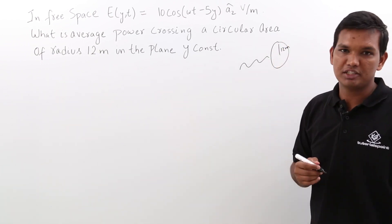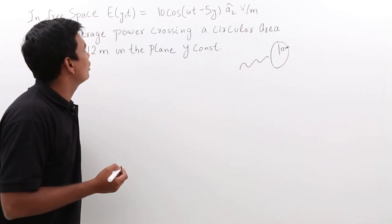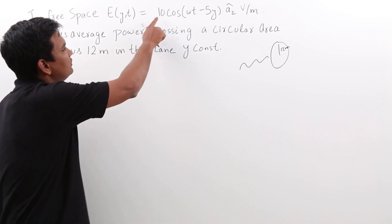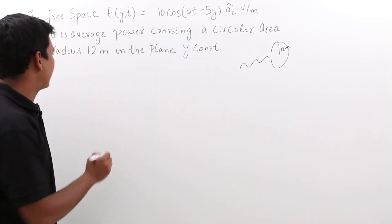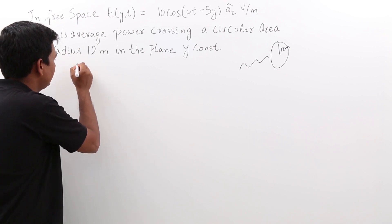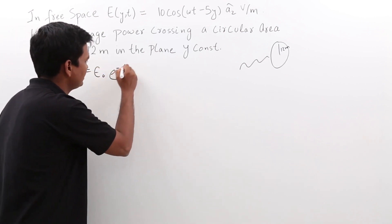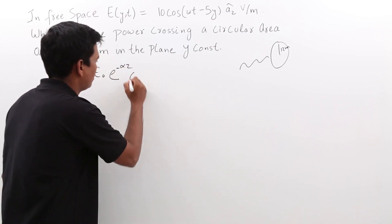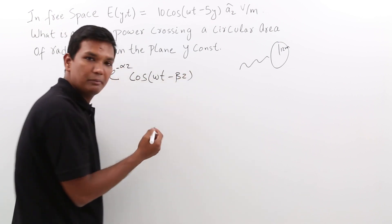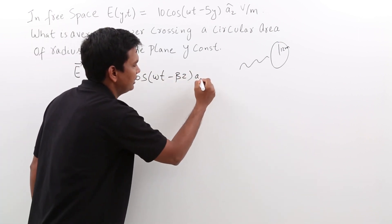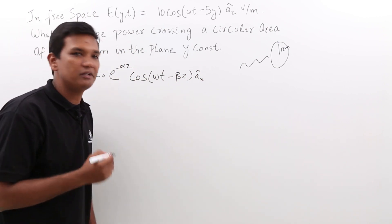Let us try to solve this problem. In order to solve this problem, what we know for a lossless medium, if I compare this question with my basic equation of electromagnetics where E is given by E₀ e^(-αz) cos(ωt - βz). Remember the basic equation which is nothing but x̂. This was the basic equation which we have already seen in the previous video.